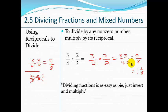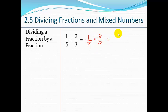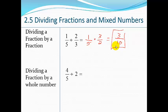Let's practice. One-fifth divided by 2-thirds: keep it the same and multiply by the reciprocal. 1 times 3 is 3, and 5 times 2 is 10. There's nothing to simplify, so the answer is 3 over 10.